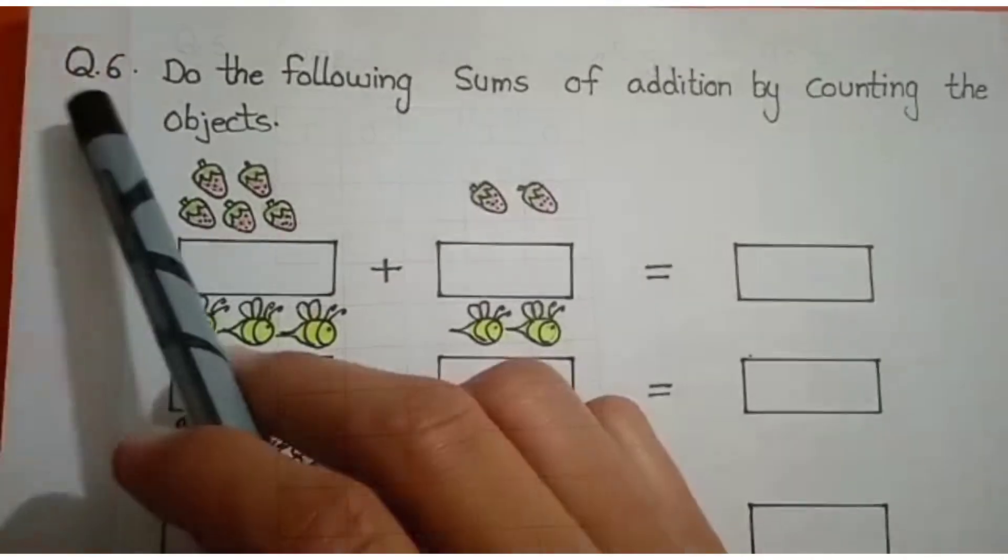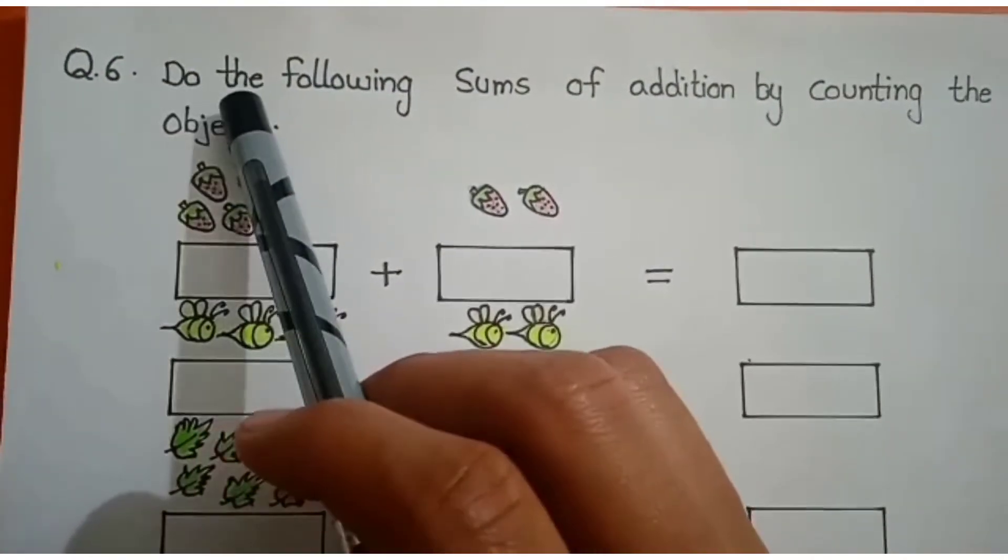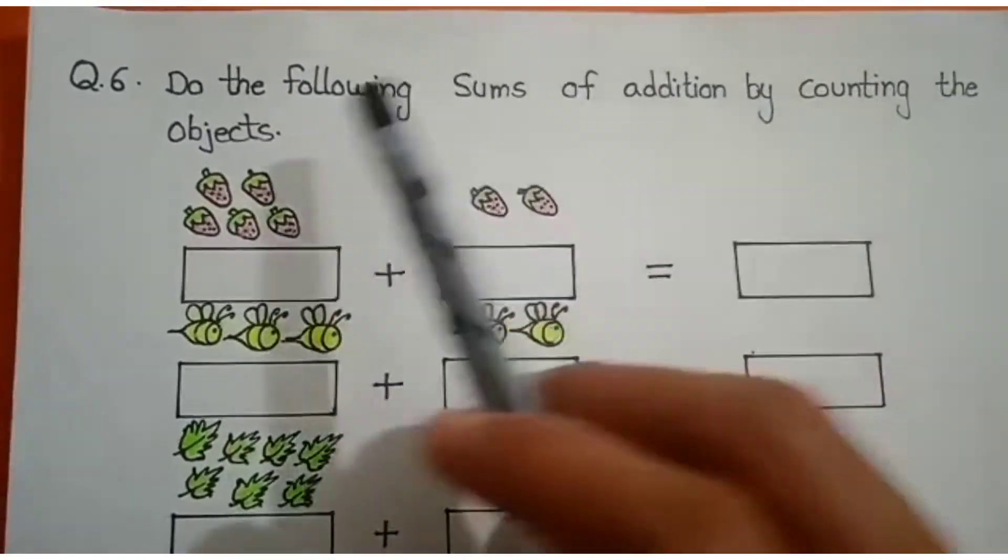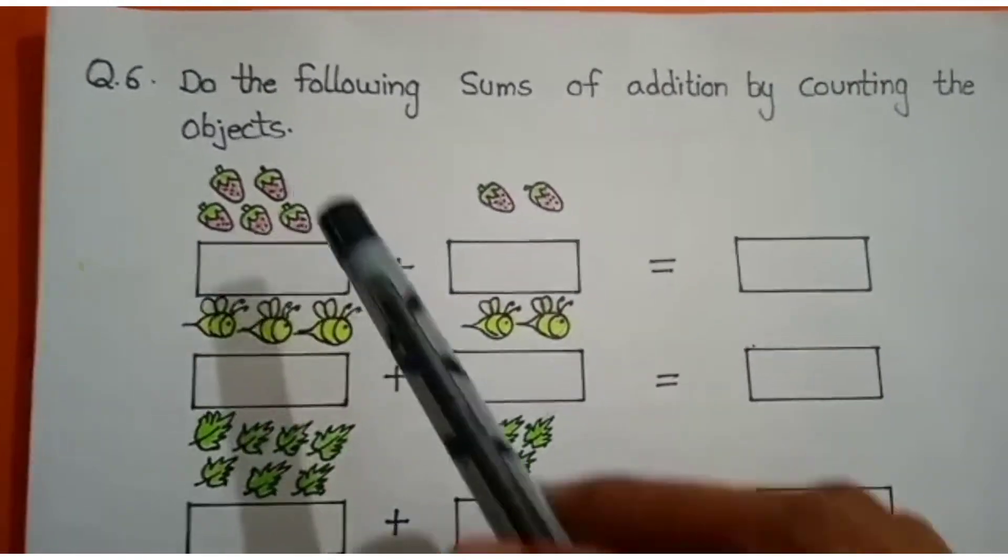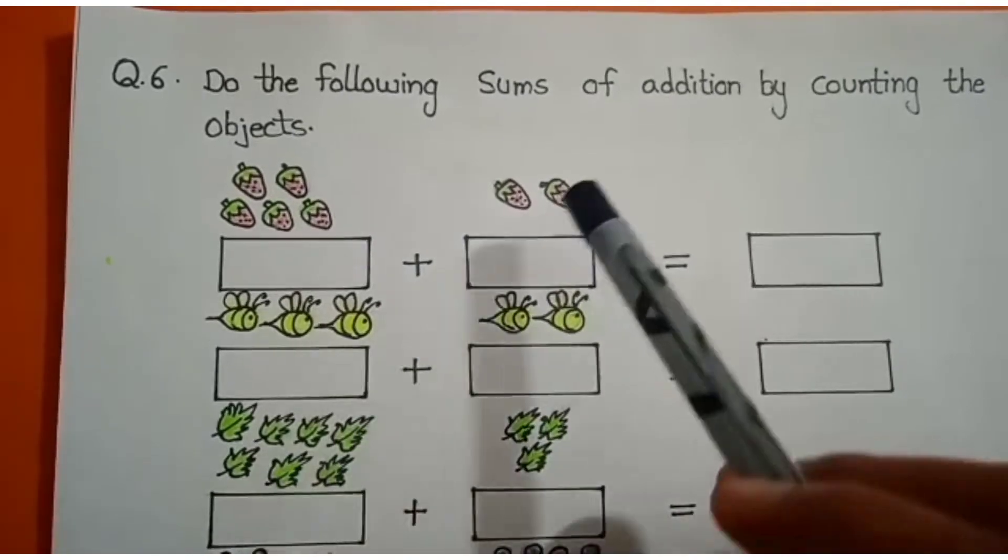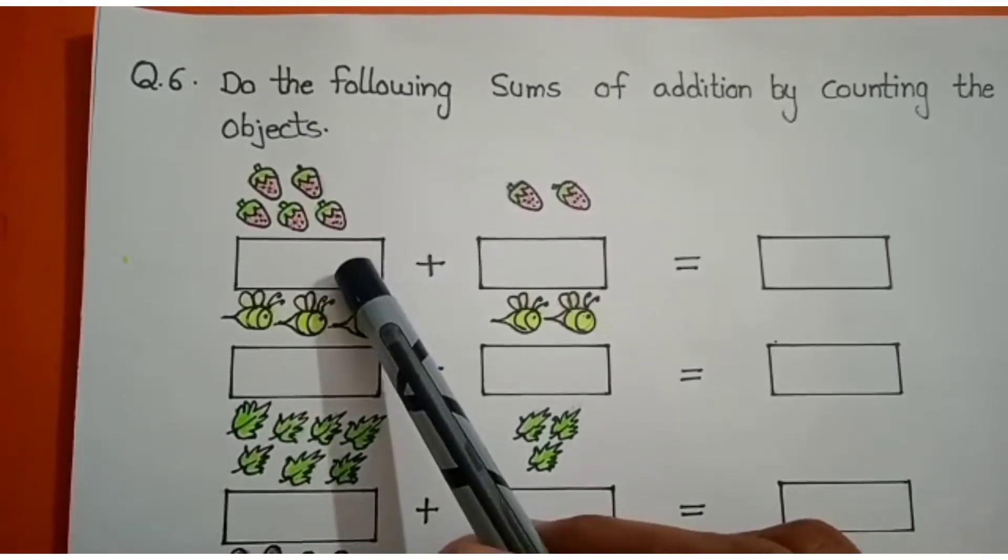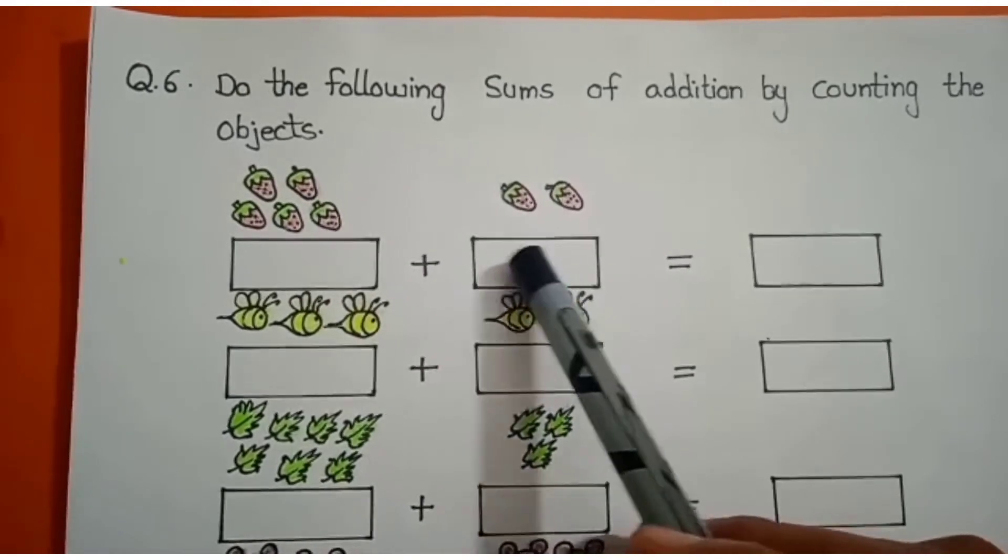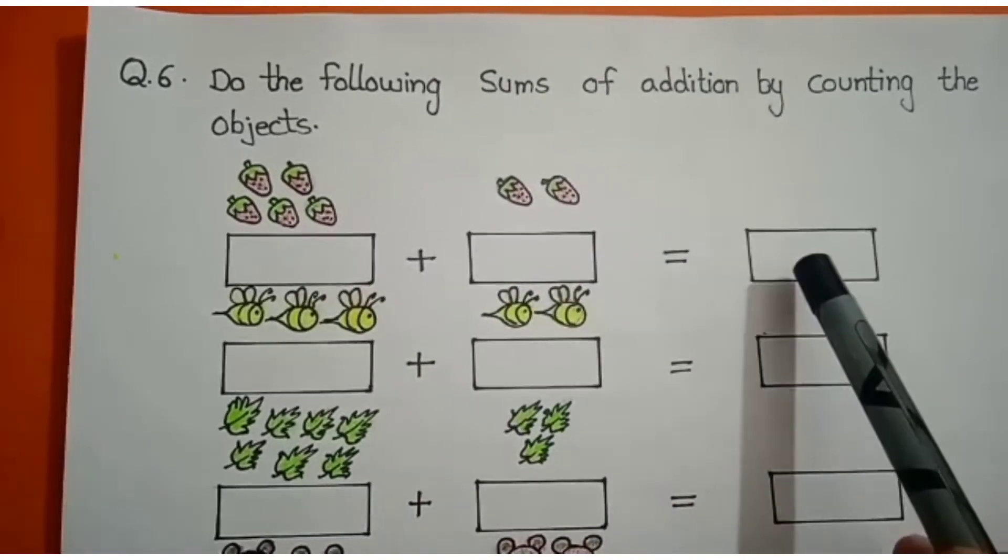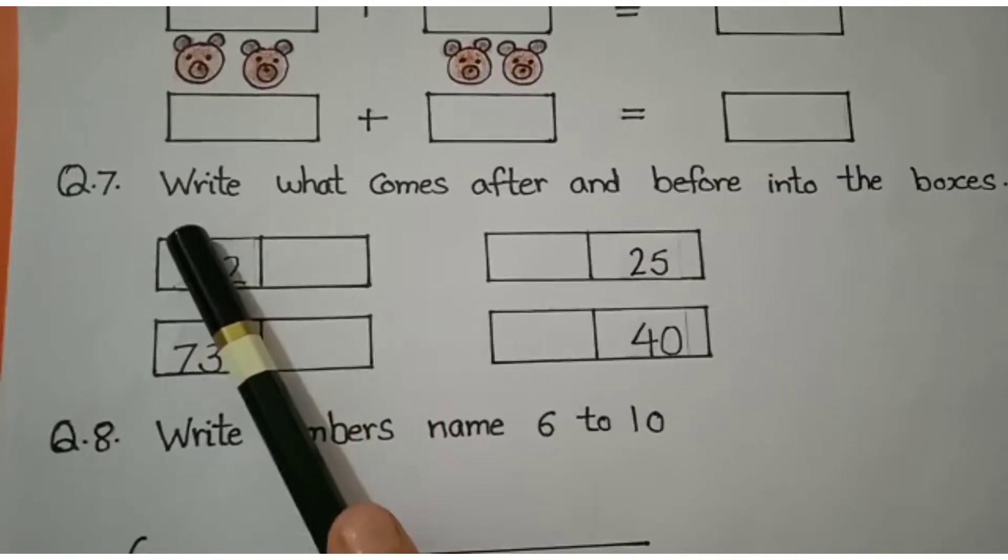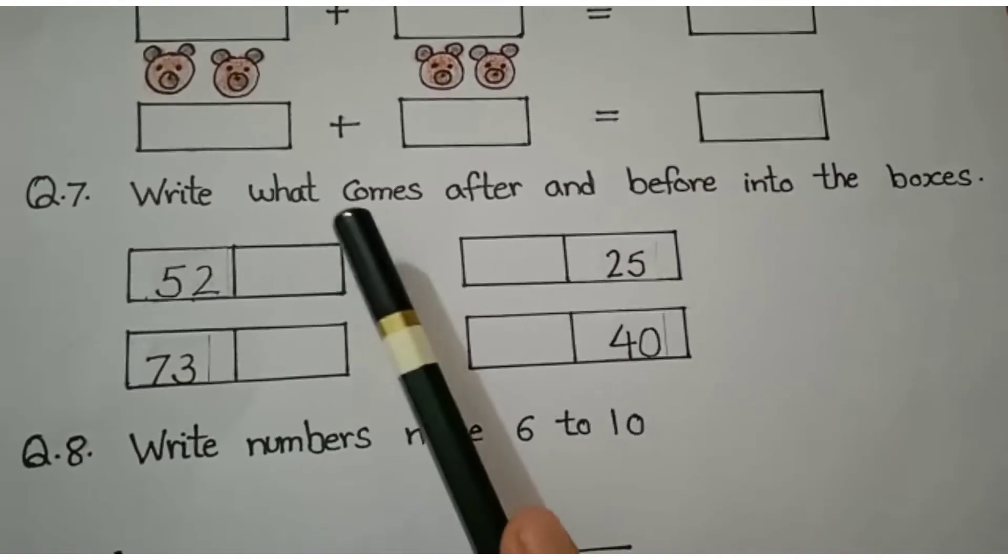Next question, question number 6 is: Do the following sums of addition by counting the objects. Here I have drawn some pictures. You have to count them and write them in the boxes. Then after, you need to add them and write the answer in these boxes.